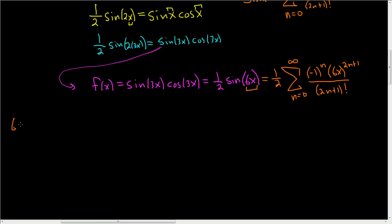First note that 6x to the 2n plus 1 can be written as 6x to the 2n times 6x to the 1, using properties of exponents. And you can break this down even further. You can write this as 6 to the 2n.